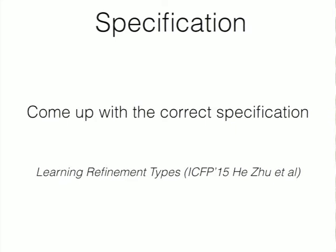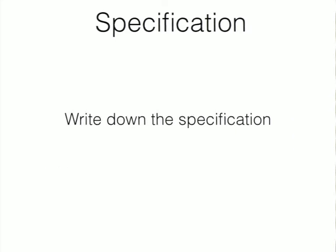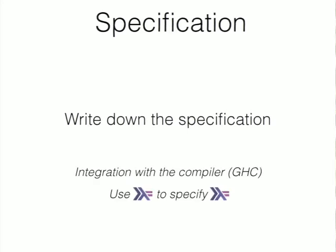Once we come up with a specification, the next step is to write it down. This step is important because Haskell users don't want to learn another language for writing specifications. What I see in the future is just using Haskell to write your specification in Haskell. To do so we need to integrate with the compiler — we need some integration with the GHC compiler.